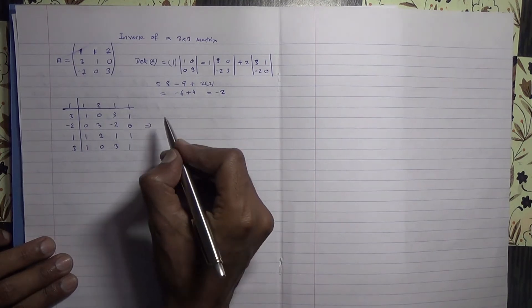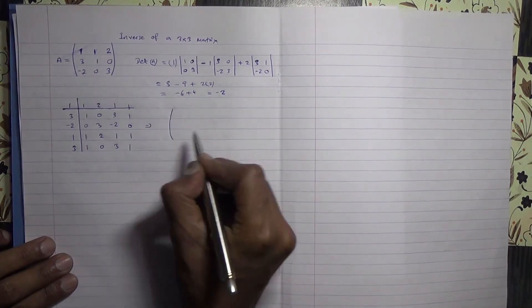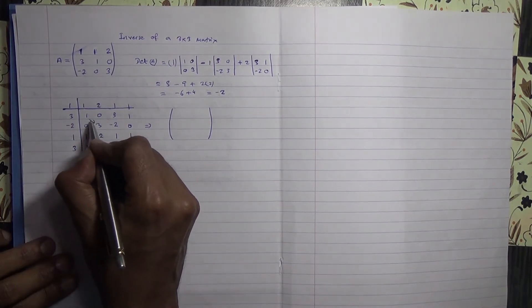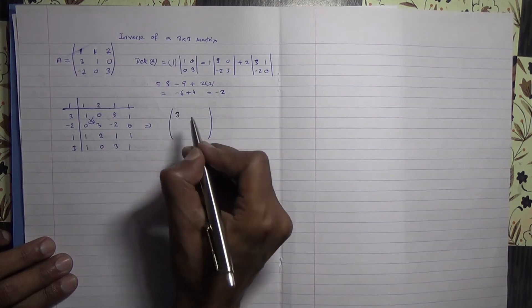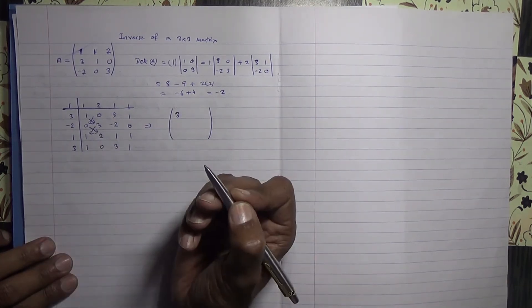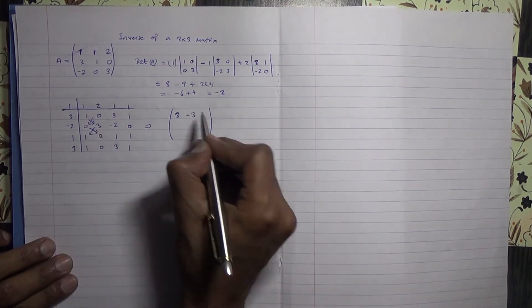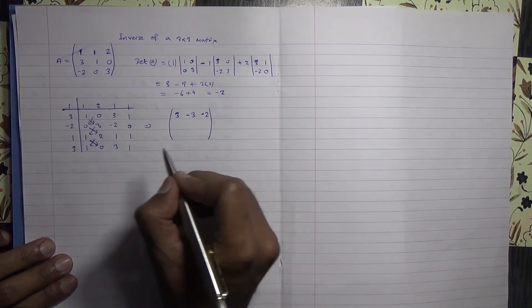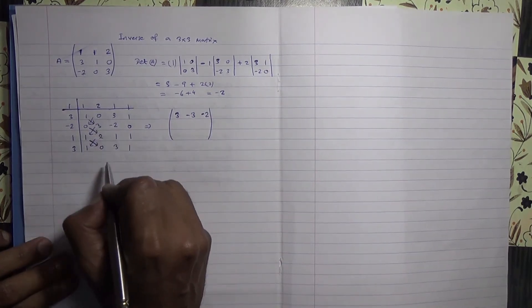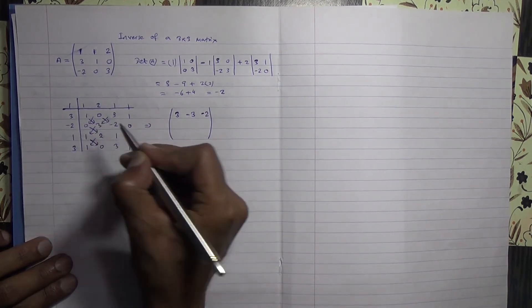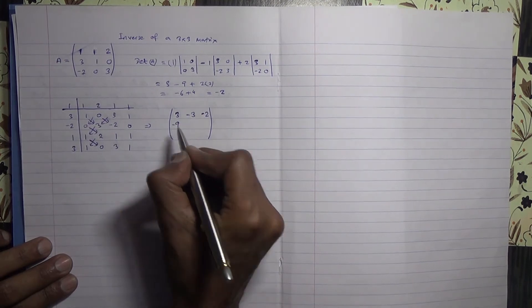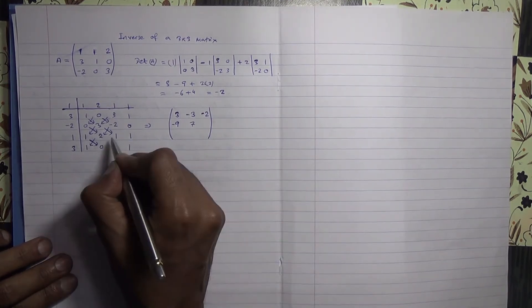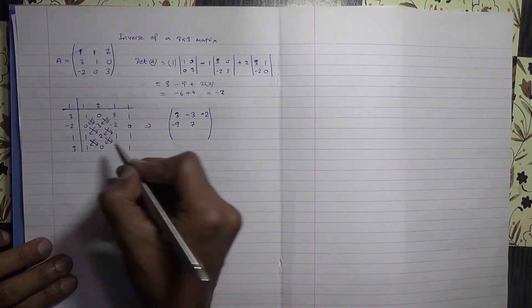Now from here, you're going to create the adjoint of the matrix, which is very easy. You take all the columns and put them as rows. 1 times 3 is 3, 3 minus 0 is 3. Then 0 times 2 is 0, 1 times 3 is 3, 0 minus 3 is minus 3. Also, 1 times 0 is 0, 2 times 1 is 2, 0 minus 2 is minus 2. For the second row: 0 times minus 2 is 0, 3 times 3 is 9, 0 minus 9 is negative 9. 3 times 1 is 3, 3 minus minus 2 is 4, which makes it 7. And then 2 times 3 is 6, 1 times 0 is 0, 6 minus 0 is 6.